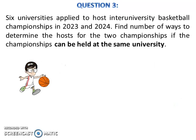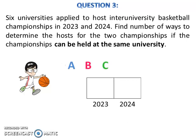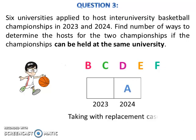Let's look at question 3. Six universities applied to host the Inter-University Basketball Championships in 2023 and 2024. Find the number of ways to determine the host for the 2 championships if the championships can be held at the same university. Draw 2 slots — one for 2023 and one for 2024. The 6 universities are A, B, C, D, E, and F. Since the same university can host both years, this is a taking-with-replacement case, so the number of ways to determine the host is 6 to the power of 2.